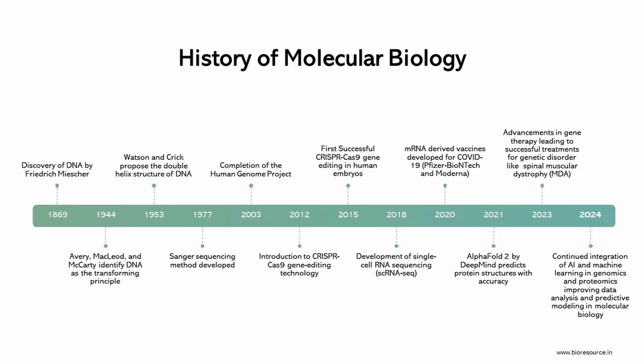Let's take a journey through the history of molecular biology, highlighting major milestones. In 1869, Friedrich Meischer discovers DNA. In 1944, Avery, MacLeod, and McCarty identified DNA as the transforming principle. In 1953, Watson and Crick proposed the double helix structure of DNA. In 1977, the Sanger sequencing method was developed. In 1983, Kary Mullis invented PCR, which revolutionized DNA amplification.